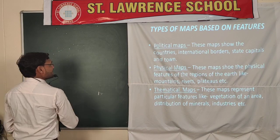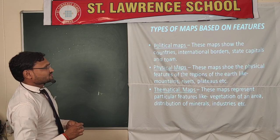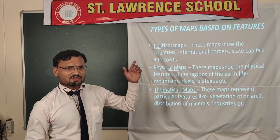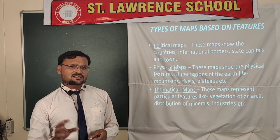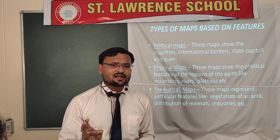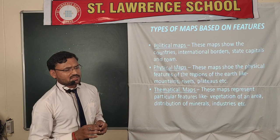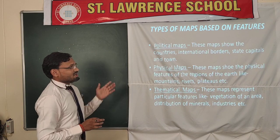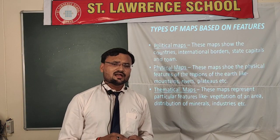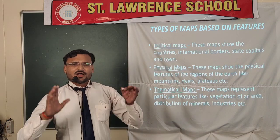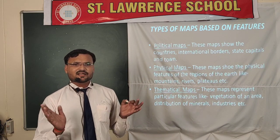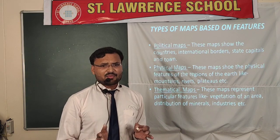The next point is types of maps based on feature. There are three types: first is the political map, second is the physical map, and third is the thematic map. In a political map, we describe the boundaries of continents, countries, and states along with their capitals.